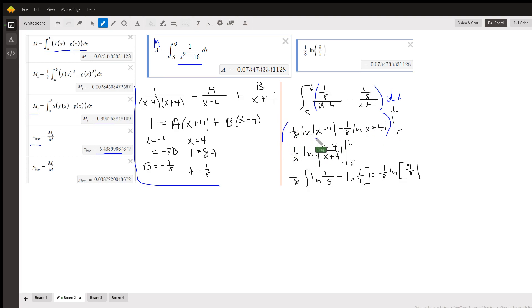This expression, you could factor out the 1/8 to use properties of logarithms to write it as ln of (x minus 4) over (x plus 4).